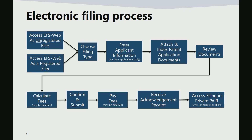The following is an overview of the electronic filing process once you have obtained the customer number and created the USPTO.gov account as mentioned earlier in steps one and two. Once you have obtained your customer number and created your USPTO.gov account, you are now considered a registered filer. As an unregistered or registered filer, applicants may choose the application filing type in EFS web.